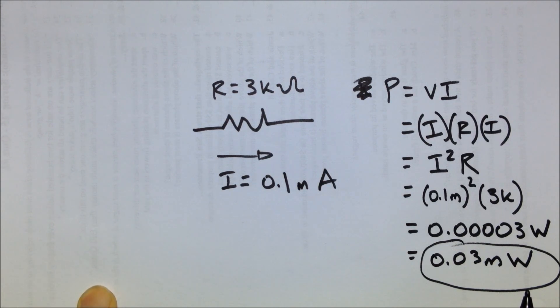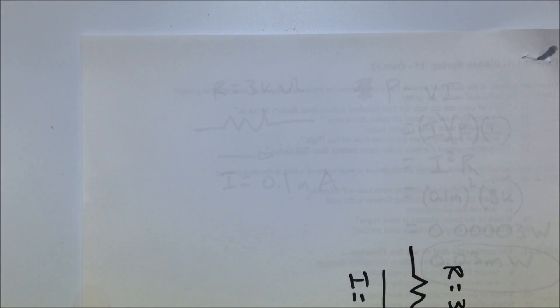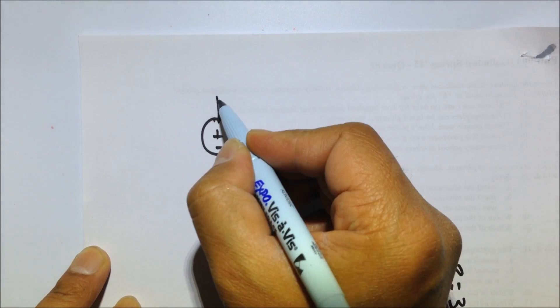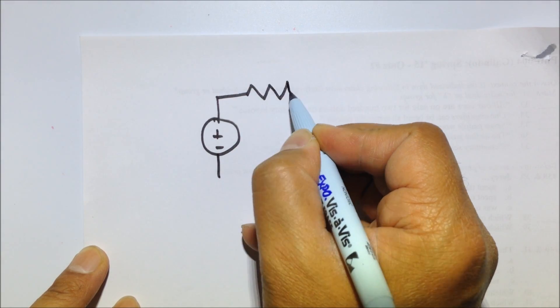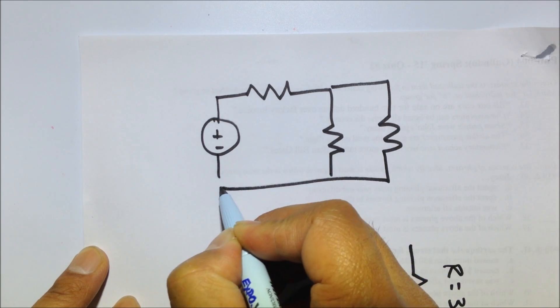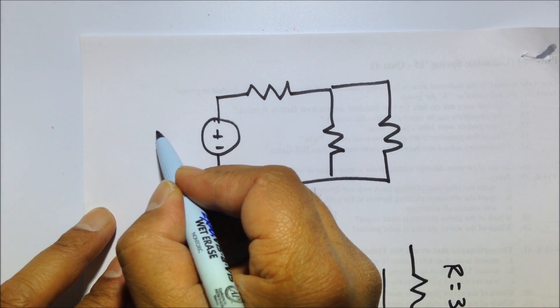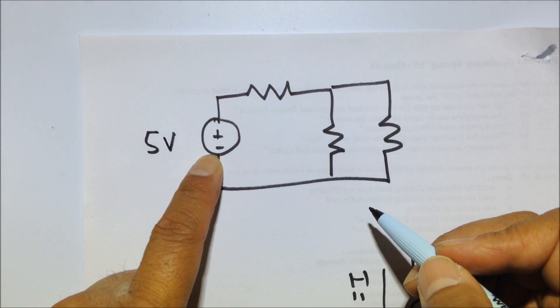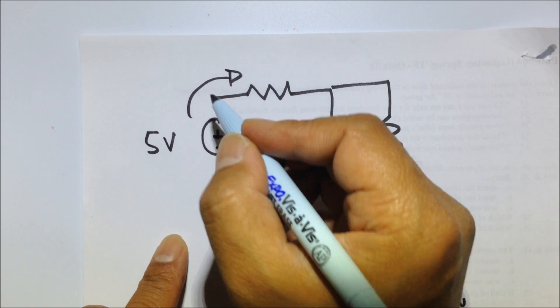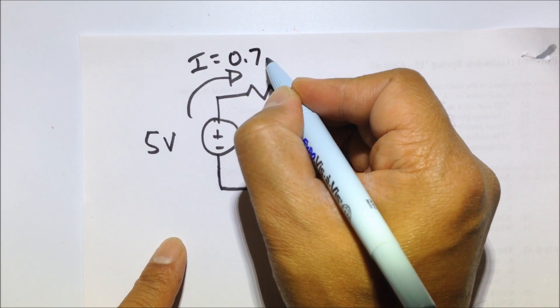Now another problem we can take a look at is power supplied by something. So let's say we have a power supply and it's going to go into some circuit. If we know what the voltage is of our power supply, and we measure the current going out of the power supply, the current that's feeding into the rest of our system, let's say 0.7 milliamps,